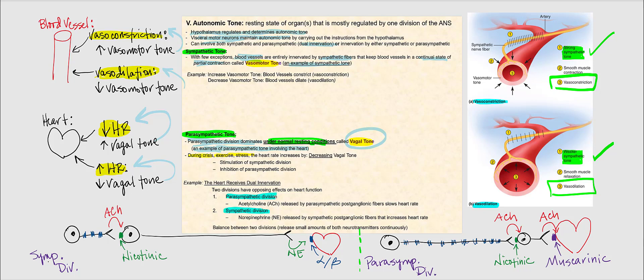Because heart rate goes up, we have a decrease in vagal tone. Looking at the sympathetic division illustration: the sympathetic pre-ganglionic neuron is classified as a cholinergic neuron, therefore it releases acetylcholine into the synaptic cleft. It will bind to the nicotinic receptor present on the sympathetic post-ganglionic neuron, which is classified as an adrenergic neuron because it releases norepinephrine into the synaptic cleft. On the heart, we find alpha or beta adrenergic receptors to which norepinephrine can bind.